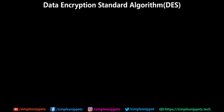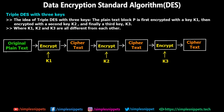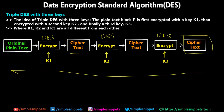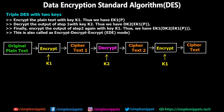Triple DES with three keys performs DES three times. The original plain text is encrypted using K1 to get a cipher text, then encrypted again using K2, then encrypted a third time using K3 to get the final cipher text. For decryption, DES is performed three times in reverse order using the sub-keys in reverse — making the encryption three times stronger.